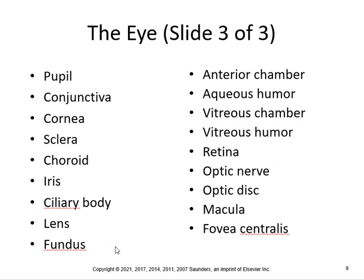Now, we just went over all these parts: pupil, conjunctiva, cornea, sclera, choroid, iris, ciliary body, lens, the fundus, anterior chamber, aqueous, vitreous chamber and humor, retina, optic nerve, optic disc, macula, fovea centralis. You don't have to identify where these are on an image because that's not the point of this class. The point of this class is just to make sure you can put prefixes and suffixes together and have a general idea of the eye.